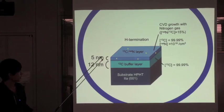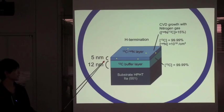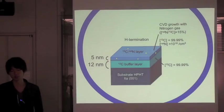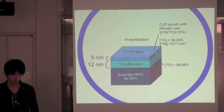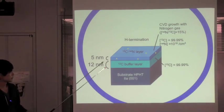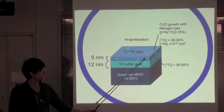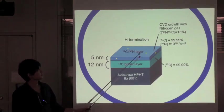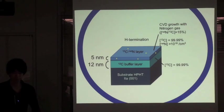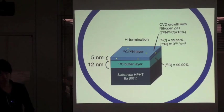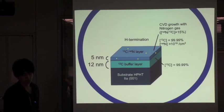In the last top layer, we grew 5 nanometer carbon-12 layer with nitrogen gas to create NV center intentionally. This layer is expected to be too high nitrogen, 10 to the 18 per cubic centimeter. The surface termination is terminated by hydrogen.